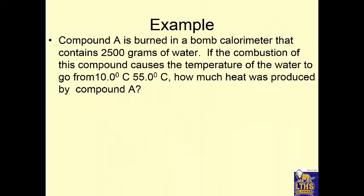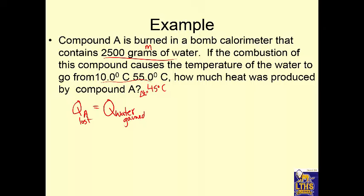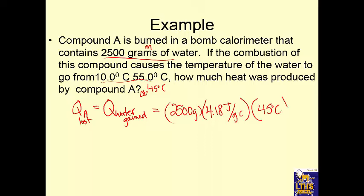Here's another example: compound A is burned in a bomb calorimeter with 2,500 grams of water. The compound causes the water temperature to go from 10°C to 55°C, a 45°C change. To find how much heat was produced: Q = mass × specific heat × ΔT = 2500 g × 4.184 J/g·°C × 45°C = 4,707,000 joules of heat lost by the reaction.